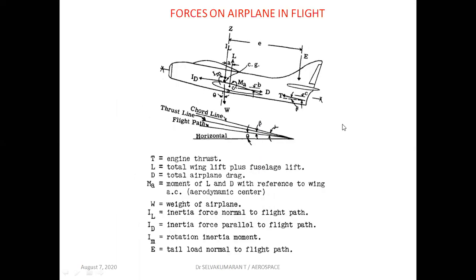The forces acting on an aircraft in flight are: thrust, lift, drag, and pitching moment acting about the aerodynamic center; weight of the aircraft acting through the CG; IL is the inertia force normal to the flight path; ID is the inertia force parallel to the flight path; IM is the inertia moment; and E is the tail load. These act at different locations and distances on the aircraft.